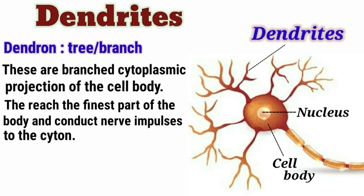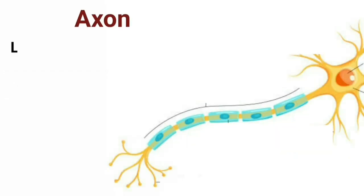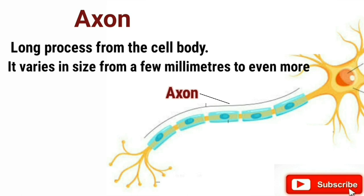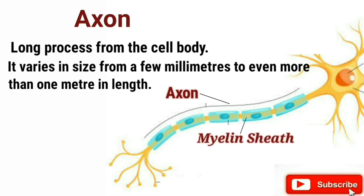Dendrites are the segment of the neuron which receive stimulation in order for the cell to become active, and they conduct electrical messages to the cell body for the cell to function. There is a defined pathway for conduction of the nerve impulse. The axon is a long process from the cell body, varying in size from a few millimetres to more than one metre in length. The axon is surrounded by a layer called the myelin sheath.